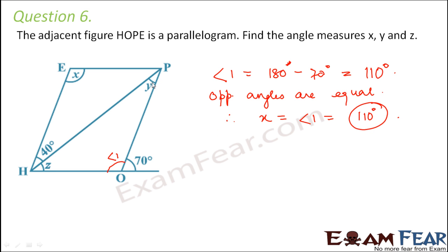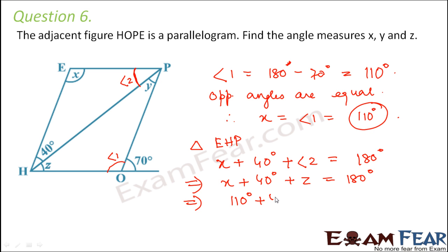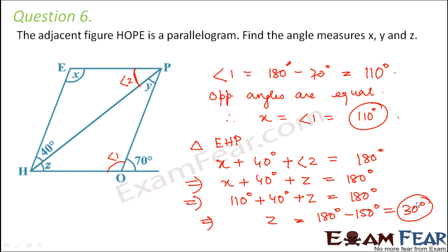Now let us look at triangle EHP. We know x, we know 40 degrees, but we do not know angle 2. Since EP is parallel to OH, angle 2 will be equal to angle z. So in triangle EHP: x plus 40 degrees plus z equals 180 degrees. Substituting x as 110 degrees: 110 plus 40 plus z equals 180, so z equals 180 minus 150, which is 30 degrees.